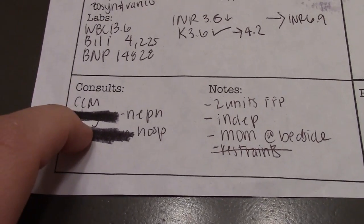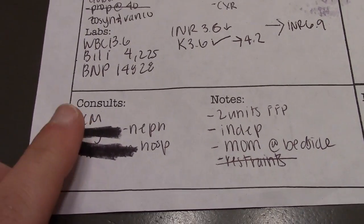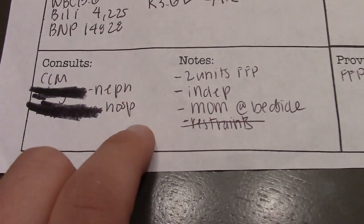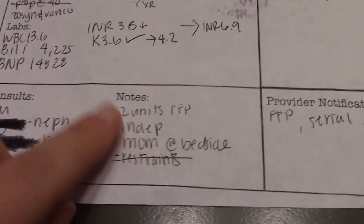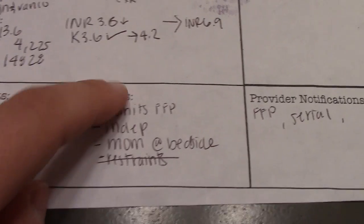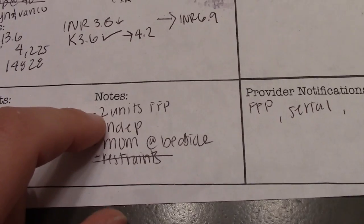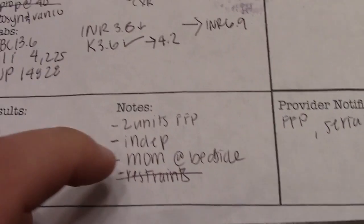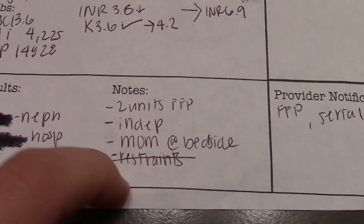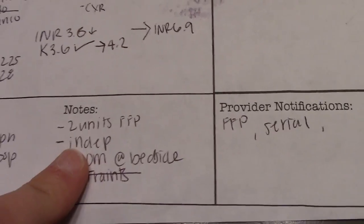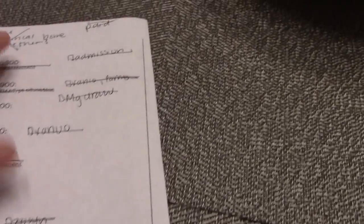Down here are the doctor's names. CCM is critical care manager, which means the intensivist is following. Then I had nephrology and hospitalist - I just crossed off the names. These are any notes or things I didn't know where to put. This patient had two units of FFP, lived independently, the mom was there. They had restraints but when they got extubated those were taken off.